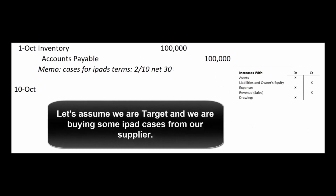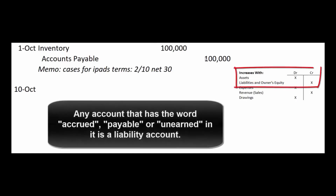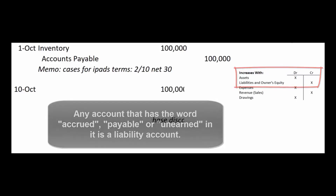For example, we're Target Corporation. We buy some iPad cases from a supplier. We debit inventory for $100,000 and we credit accounts payable for $100,000. Accounts payable is a liability account, and liability accounts increase with credits. Any account that has the word accrued, payable, or unearned in it is a liability account and increases with credits.